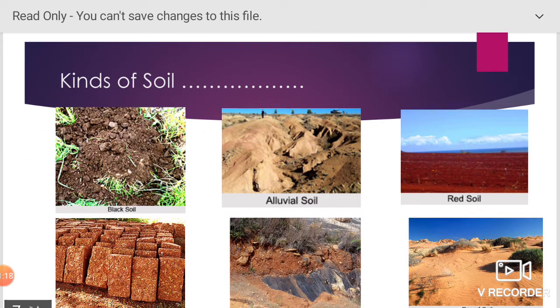Kinds of soil. Six main kinds of soil are found in India. They are black soil, alluvial soil, red soil, laterite soil, mountain soil, and desert soil.